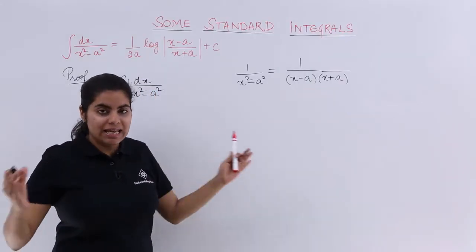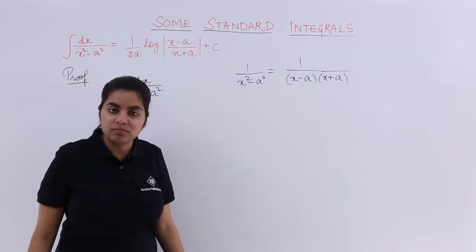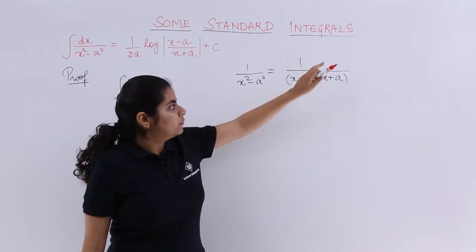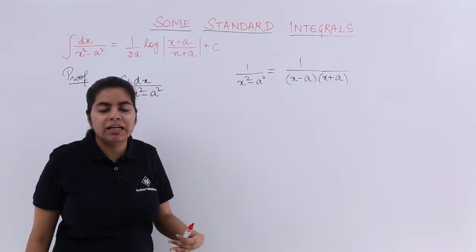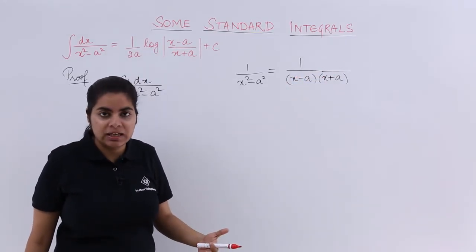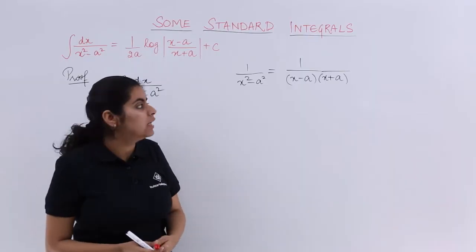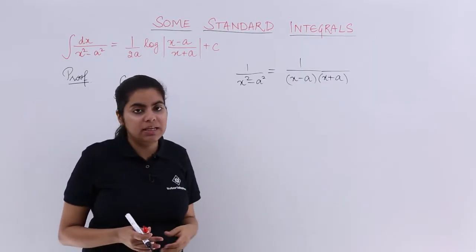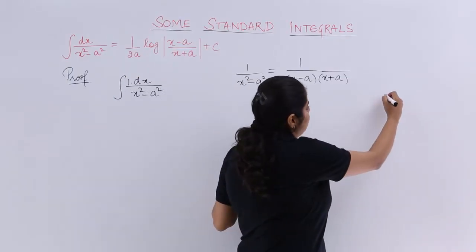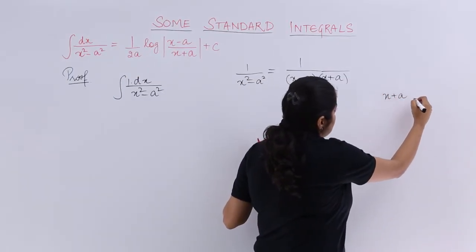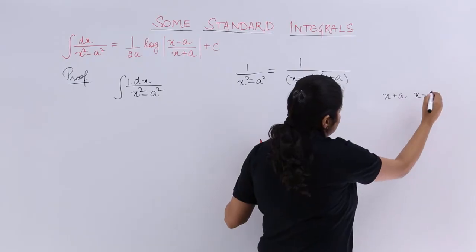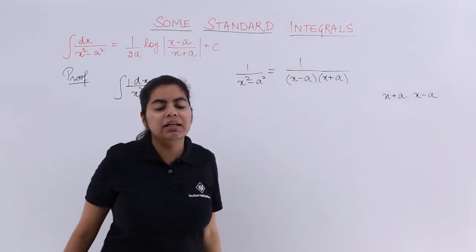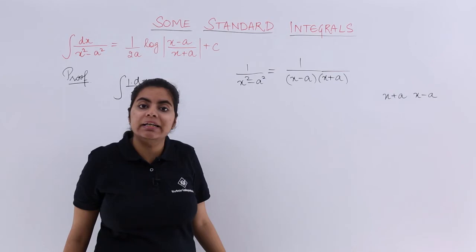I would have used the formula in the denominator and it would have become something called as this: x plus a, x minus a in multiplication. Now, this 1, can we modify or manipulate this 1? How can we get 1 with these 2 things in the denominator? I have x plus a, I have x minus a. I want to get 1 from these things.